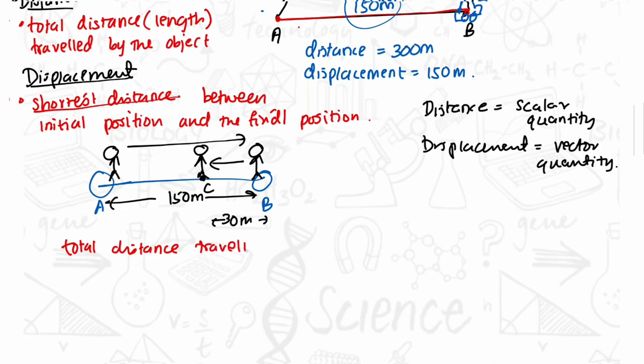So the total distance traveled by this man will be 150 plus 30 meters. That will give us the total 180 meters.